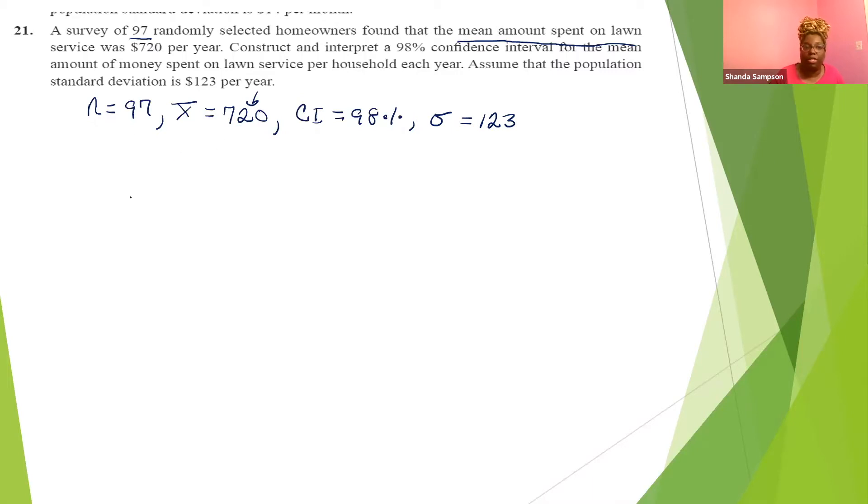So we need to find a confidence interval right away. You can look on your formula sheet, but your confidence interval formula is x bar minus E and E is what? We should say x bar minus E is less than mu is less than x bar plus E. And E is equal to Z alpha over two times sigma over the square root of n.